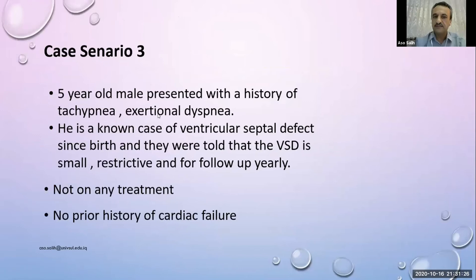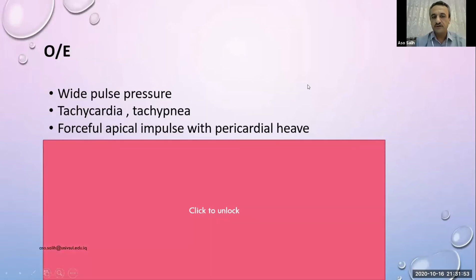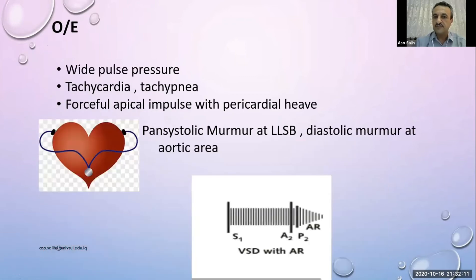Case three: a five-year-old male presenting with tachypnea and exertional dyspnea. Known case of ventricular septal defect since birth, told it was small and restrictive, requiring only yearly follow-up, not on any treatment, no prior cardiac failure. Now presenting with wide pulse pressure, tachypnea, tachycardia, forceful impulse with parasternal heaving. On auscultation: a murmur at the lower left sternal border and a diastolic murmur at the aortic area.